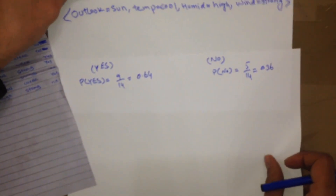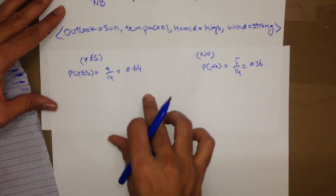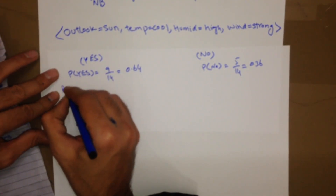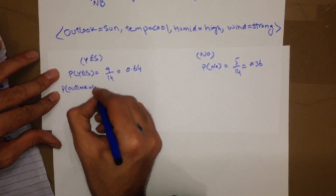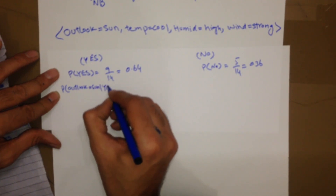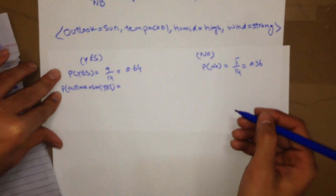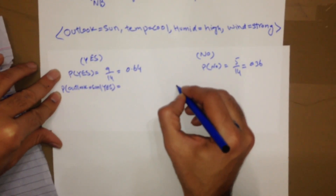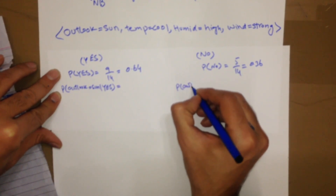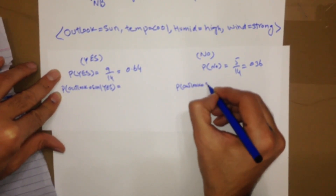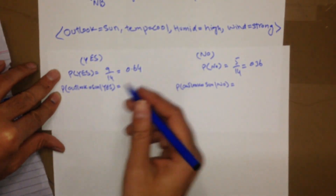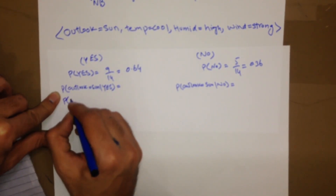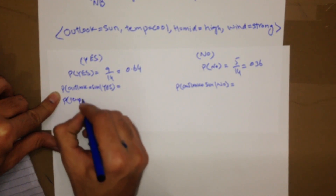The next step is to take this instance and calculate the conditional probabilities. We need to calculate the probability of outlook equal to sunny given yes, and the probability of outlook equal to sunny given no.